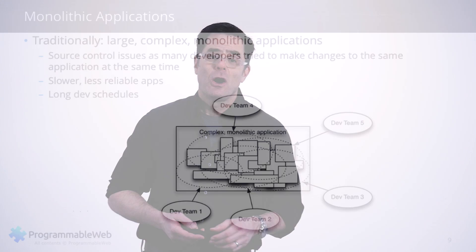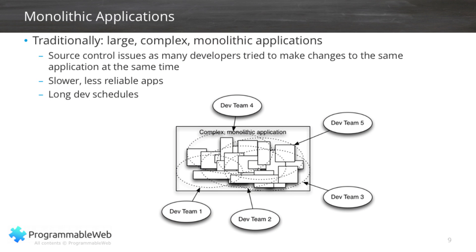Development schedules can get very long — we've heard of projects taking two to four years before they're completed — whereas when you have API-led connectivity in the seams between your applications, it could take hours or days, maybe weeks. A typical picture of a monolithic application shows a lot of overlapping functionality, with different parts of the application sometimes doing the same thing — redundancy. Development teams are touching overlapping parts and when they make their commits and put in new source code, those commits may conflict in ways that produce undesirable outcomes.